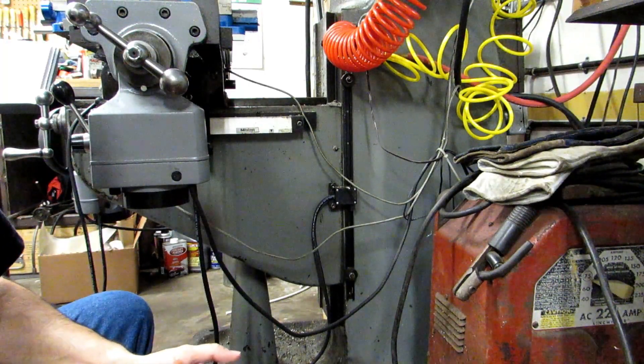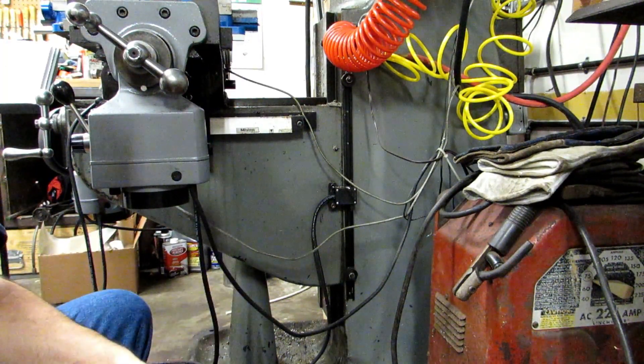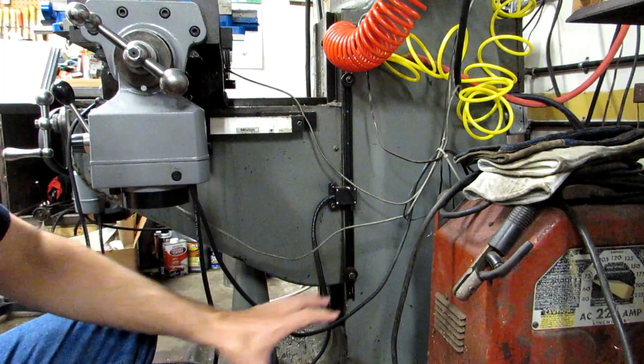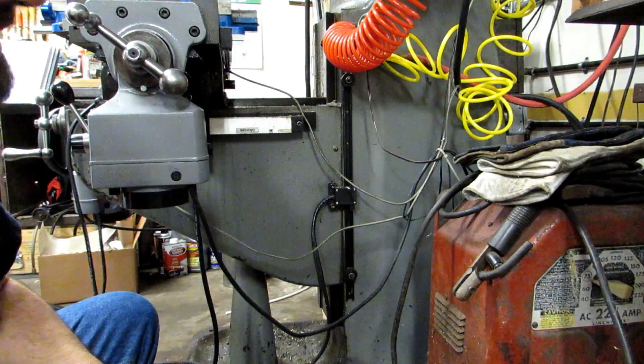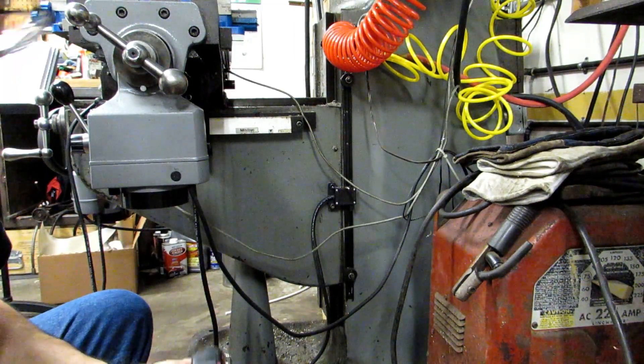So I have a 3-axis digital readout to install so I'm going to be putting it on the knee. I'll actually be putting it on the other side because I have the power feed limit switch on this side but it was easier to get the camera over here.